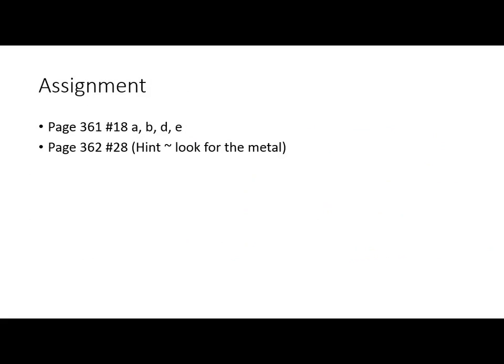Assignment: page 361, number 18 — parts A, B, D, and E only. Then page 362, number 28 — they ask whether each example is a molecular compound or an ionic compound. The hint: if there's a metal present, it's an ionic compound. Have a great weekend.